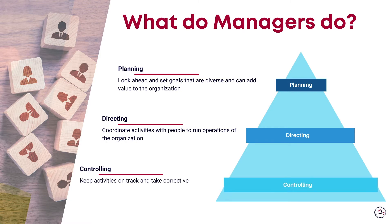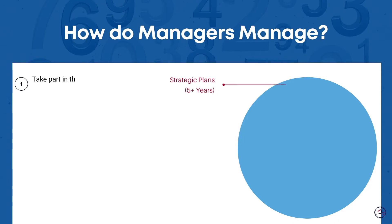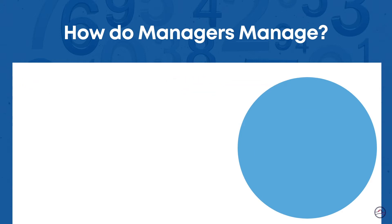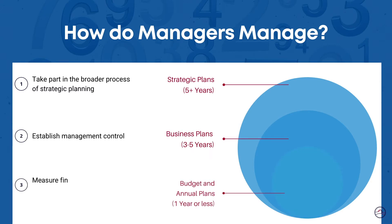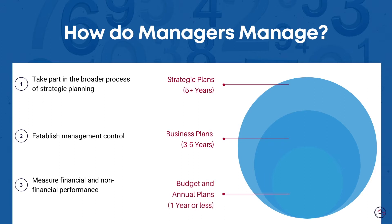But how do managers manage? Regardless of an organization's size, to operate successfully, all managers must plan. There are three types of plans. Strategic plans — these are long-term, high-level plans that address strategic priorities of an organization. Business plans — these are medium-term plans that serve as a roadmap that outlines how you will achieve your strategic priorities. Annual plans — these are short-term plans that focus on day-to-day operations, for example, finances, human resources, and communications. For the purpose of this video, our focus will be on annual plans.